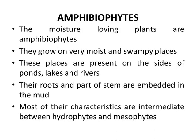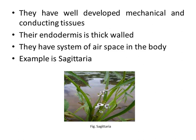Amphibophytes: the moisture-loving plants are amphibophytes. They grow on very moist and swampy places. These places are present on the sides of ponds, lakes, and rivers. Their roots and parts of stem are embedded in the mud. Most of their characteristics are intermediate between hydrophytes and mesophytes. They have well-developed mechanical and conducting tissues. Their endodermis is thick-walled. They have a system of air spaces in their body. Their example is Sagittaria.